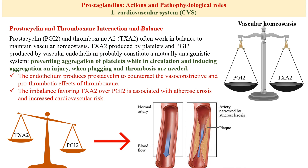Thromboxane is produced by platelets and prostacyclin is produced by the vascular endothelium; these both work together in a mutually antagonistic system. In normal circulation, prostacyclin prevents platelet aggregation, while during injury requiring plugging or thrombosis, thromboxane induces platelet aggregation. In short, the endothelium produces prostacyclin to oppose the vasoconstrictive and pro-thrombotic actions of thromboxane.